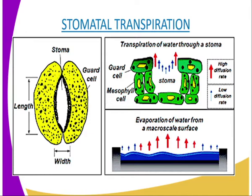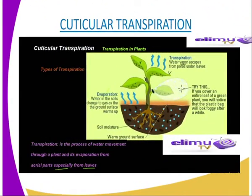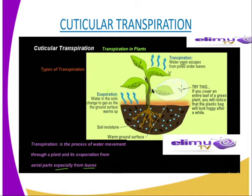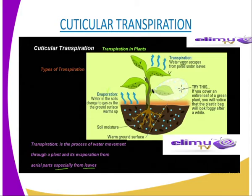The second type is cuticular transpiration, whereby in simple terms, it is the loss of water from the plants in the form of water vapour through the cuticles of plants. As you can see from the left side of the diagram, we have evaporation whereby water in the soil changes to gas as the ground surface warms up. This water is absorbed from the soil and transported through the xylem vessels of the stem, then reaching the xylem vessels of the leaves, and eventually leaving through the cuticles of the leaves to evaporate to the atmosphere. This is what we call cuticular transpiration.